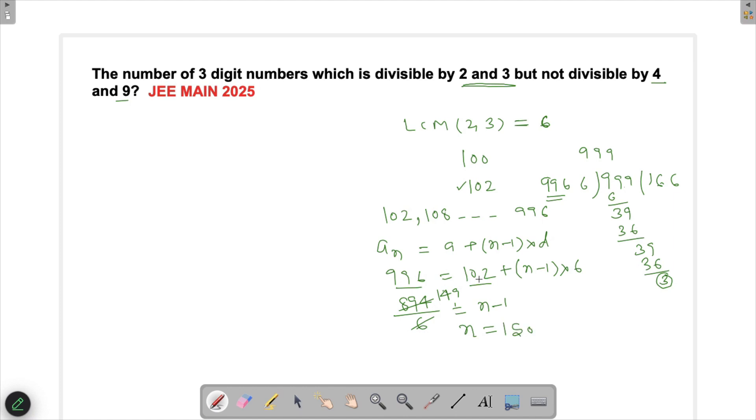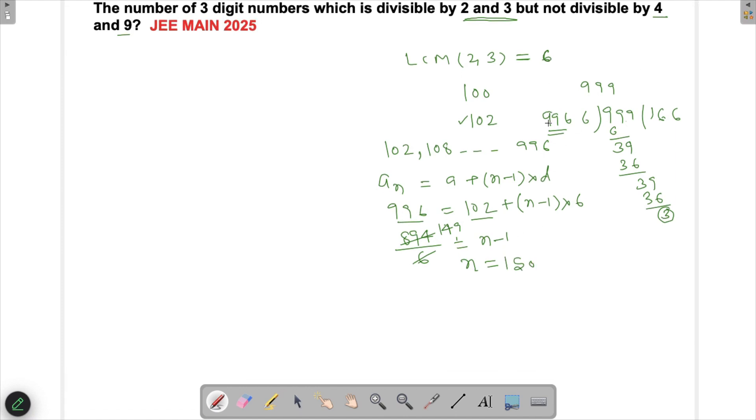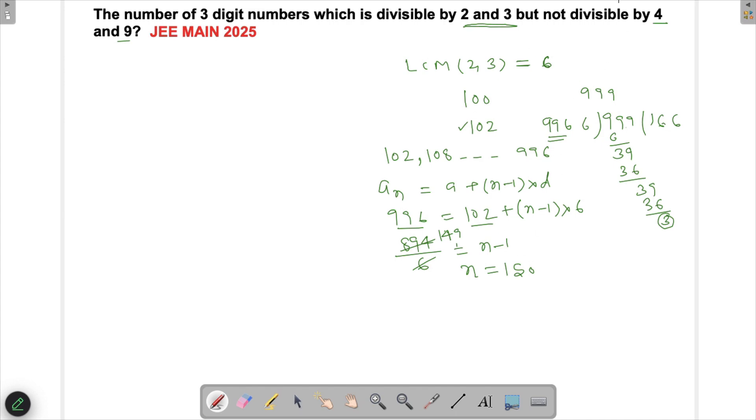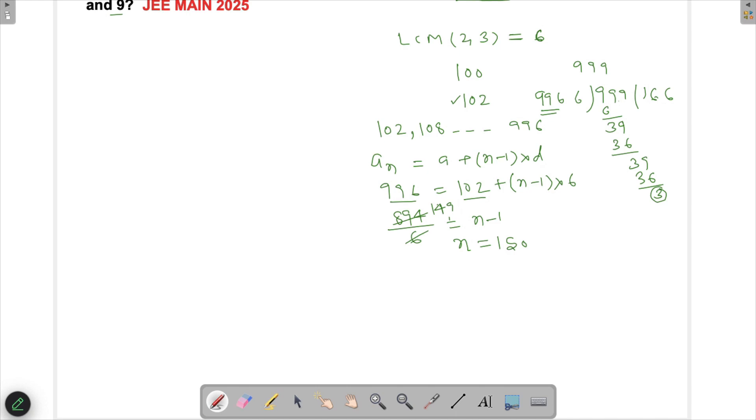Now we'll do the same thing for 4 and 9, and our idea is that first we'll find this number and then we'll subtract those numbers which are divisible by 4 and 9. So similarly, LCM of 4 and 9 is actually going to be equal to 36. Now I'll start with the number 36 and find the smallest number which will be divisible by 36, which is a three-digit number. So that will be 108, that is easy to know.